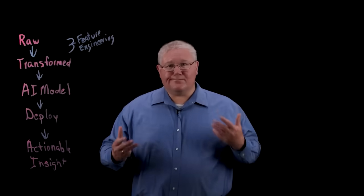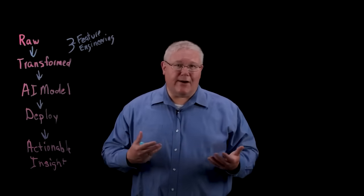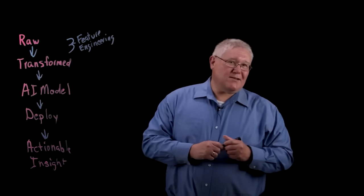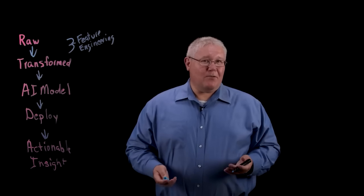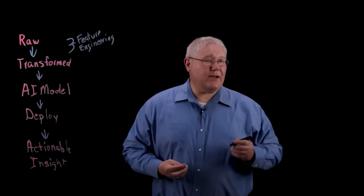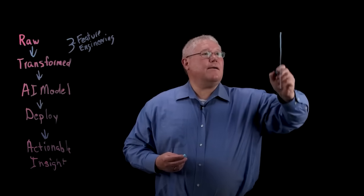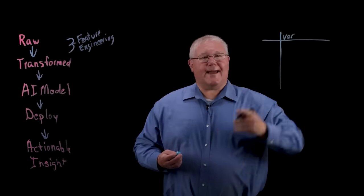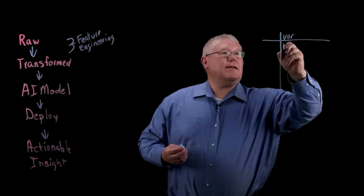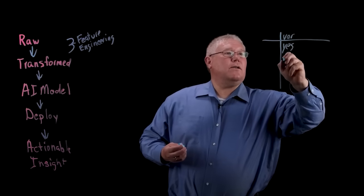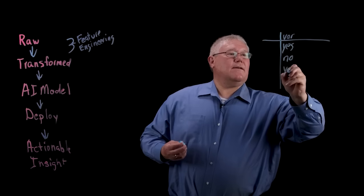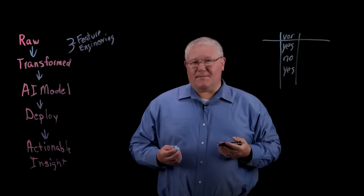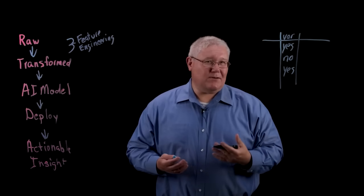So what does feature engineering look like? What kind of feature engineering would a data scientist do? Probably the most common one is something that we call dummy variables, or sometimes it's called one-hot encoding. But this is a situation where you have a variable that is a category. For example, yes, no, yes. Text like this or a category like this, a lot of times the AI model doesn't really know what to do with it.